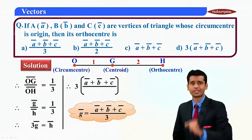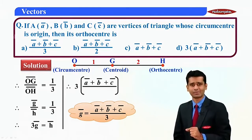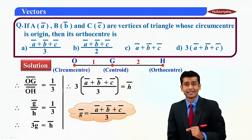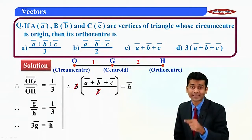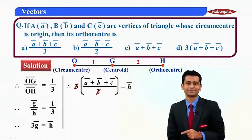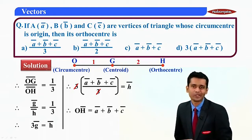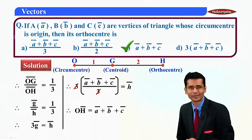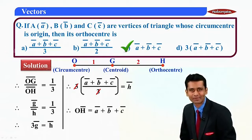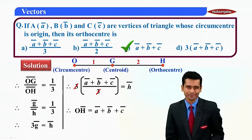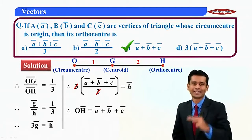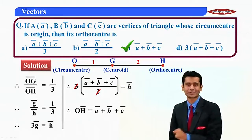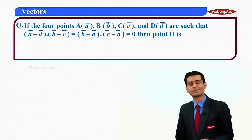Substituting the centroid formula: 3 × (a-bar + b-bar + c-bar) / 3 = h-bar. The 3s cancel, so h-bar = a-bar + b-bar + c-bar. Therefore the orthocenter equals a-bar + b-bar + c-bar, which is option C.